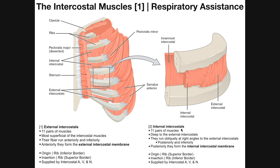During quiet or passive inhalation, we do see contraction of the external intercostals. However, during quiet or passive exhalation, we generally do not see the internal intercostals contract. Usually these become more important during active or forced exhalation. Normally, passive exhalation is simply due to the relaxation of the external intercostals and the diaphragm — you don't actually need any active muscles to exhale passively. But during forced exhalation, we do see the internal intercostals begin to contract.